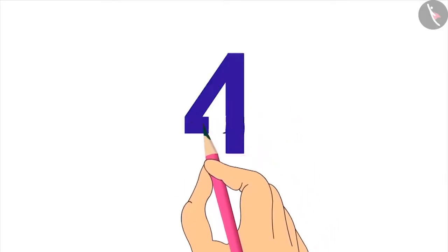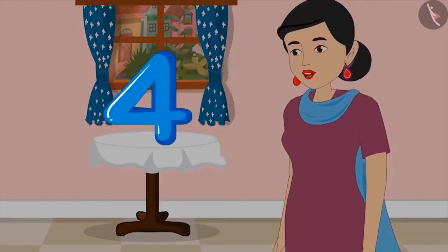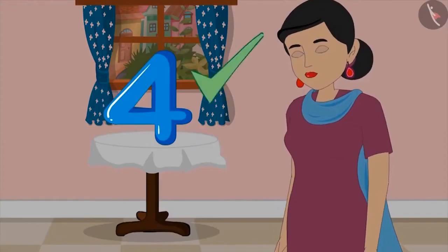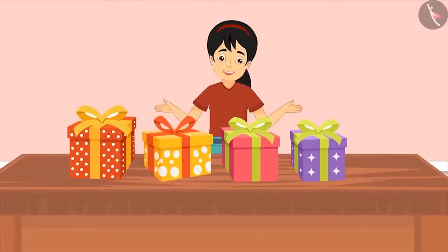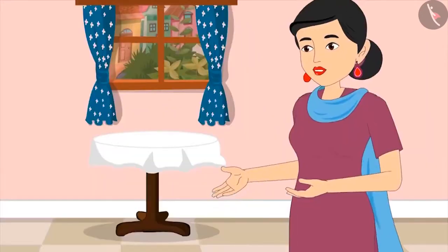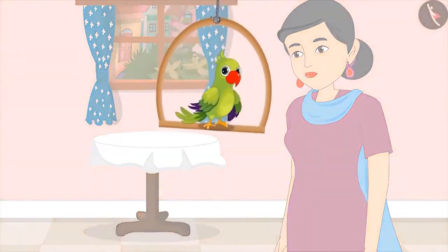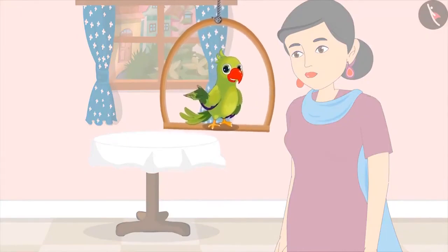Pinkie corrects herself and shows her mother the number. The mother says: Very good Pinkie, you have written four absolutely correct. Pinkie asks: Mom, can I open and see my gifts now? Yes, my dear. It is evening and Pinkie is placing fruits on the table in a line — first two oranges, then two mangoes, and finally an apple.